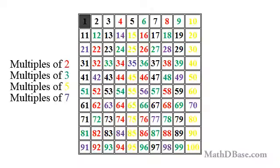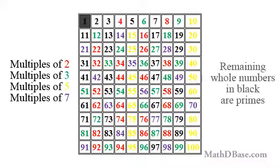Continue by starting with the next prime numbers in the same way until your list ends. Each of the starting numbers is a prime number listed in consecutive order. The numbers that remain on your list, in black, are primes. The sieve works because the numbers that are colored are multiples of the first prime numbers — 2, 3, 5, 7, 11, and so on. If a number is colored, it is a multiple of another number other than 1, and therefore not a prime.